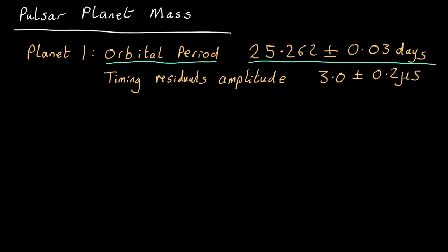Look at that beautiful precision. You can also measure, in addition to how long it takes to do one oscillation, how big the oscillation is. That is to say, how much sooner than average the pulses arrive at one end and how much later at the other. And that turns out to be a whopping 3.0 microseconds. Okay, so that's our data.